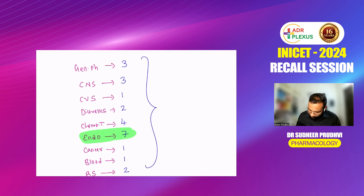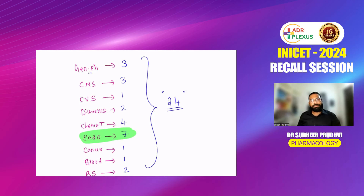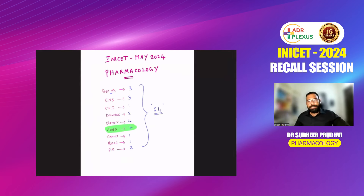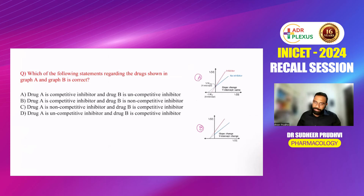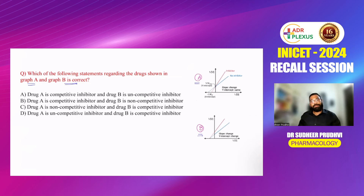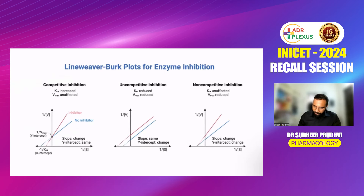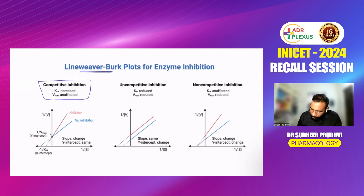We'll start from chapter one — general pharmacology — and gradually finish all questions. The first question is a very easy one on competitive vs non-competitive inhibition from pharmacodynamics: which of the following statements regarding drugs shown in graph A and graph B is correct? Before discussing whether it is competitive or non-competitive inhibition, let me put Lineweaver-Burk plots in front of you.